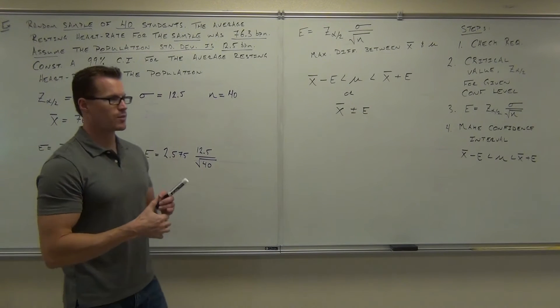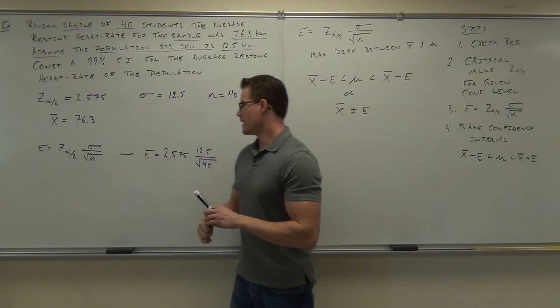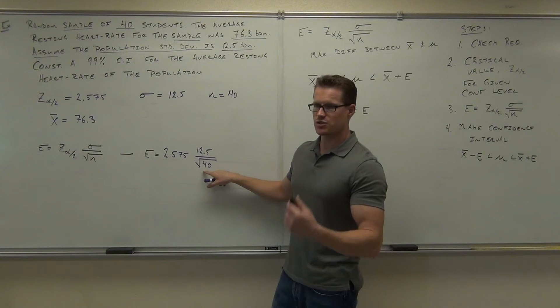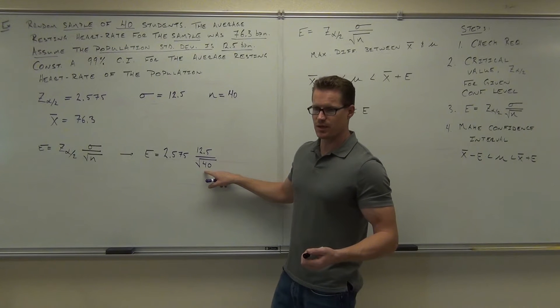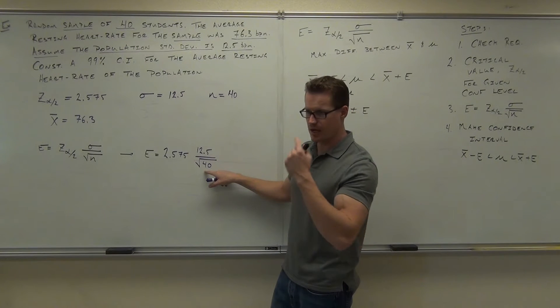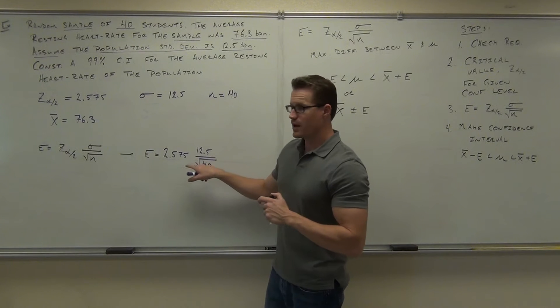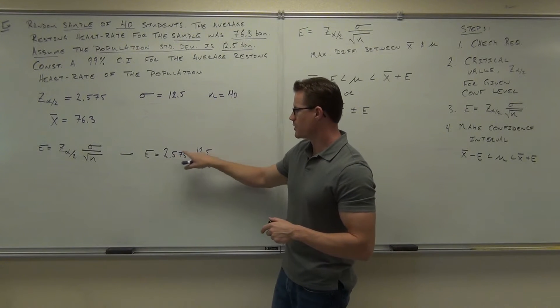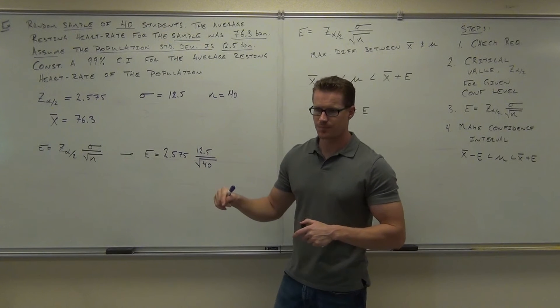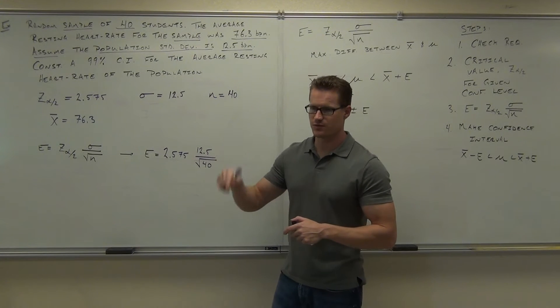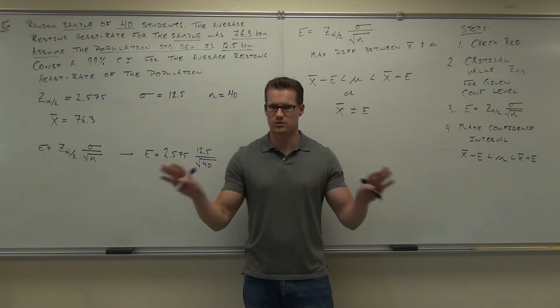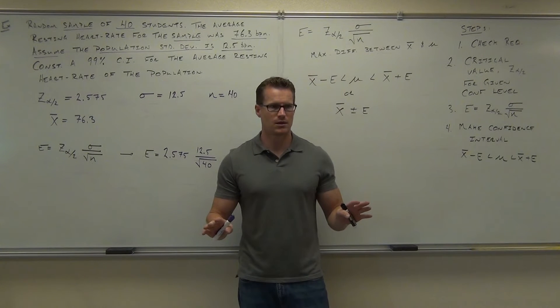Try to do this without rounding. If you'd like to do this without rounding, there's a couple ways you can. First thing you might want to do, you could figure out the square root of 40 and store that in your memory. That's one thing you could do. You have a memory button on every calculator. Or if you have one of your graphing calculators, take 2.575, multiply by 12.5, press enter. Then press divide, put square root of 40, press enter. It'll give it to you without writing anything down. Have you done that?